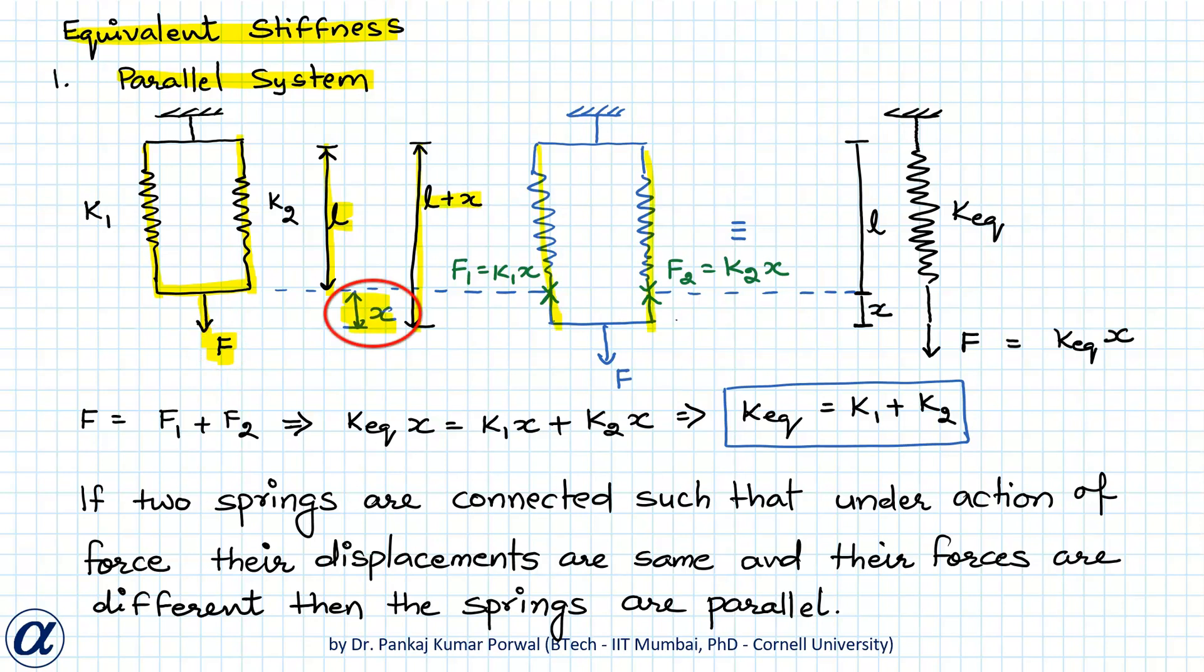So extension in both the springs is X and because the stiffnesses are k1 and k2, the forces F1 and F2 will be equals to k1x and k2x.